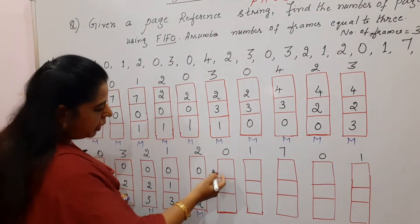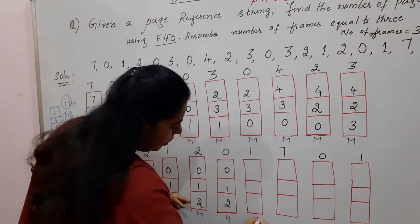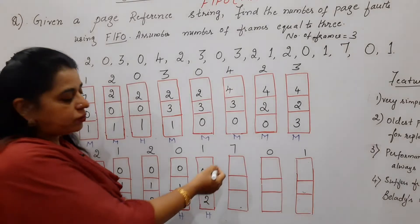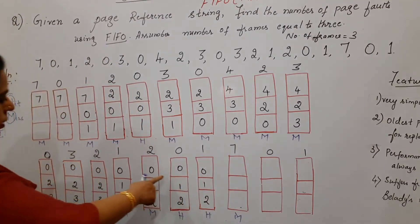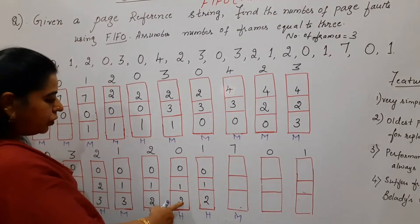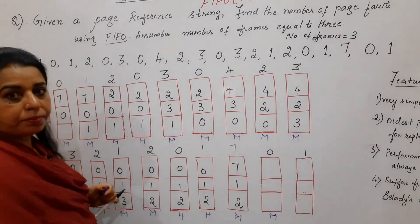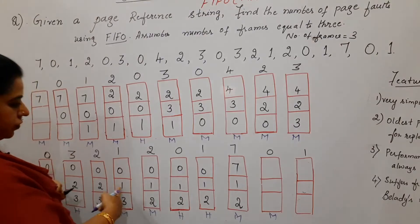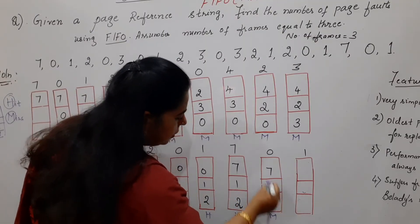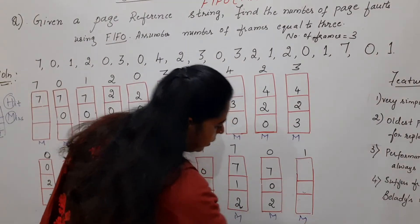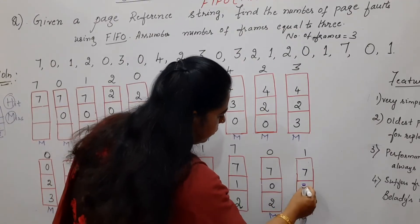Page 7 is not there — miss, write M. Out of 0, 1, 2 — page 0 is the oldest. Replace 0 with 7; keep 1 and 2 as is. Page 0 is not there — miss, write M. Out of 7, 1, 2 — page 1 is oldest. Replace 1 with 0; other 2 pages stay. Page 1 is also not there — miss, write M. Out of 7, 0, 2 — page 2 is oldest. Replace 2 with 1. Final state: 7, 0, 1.